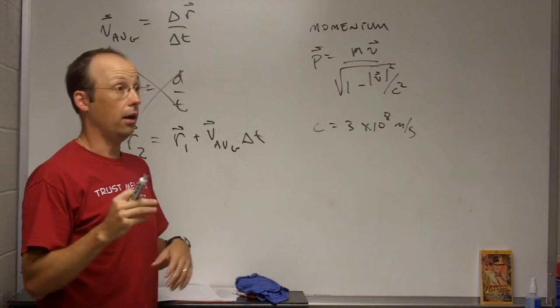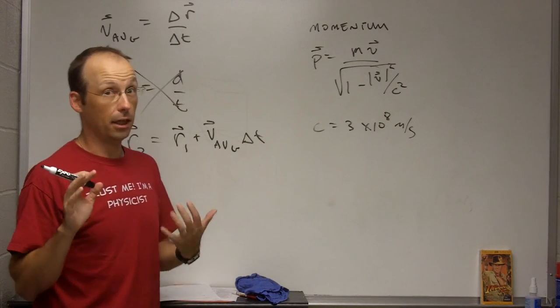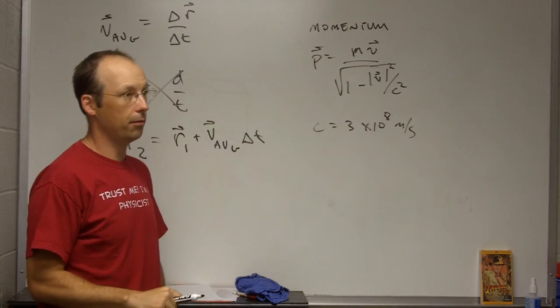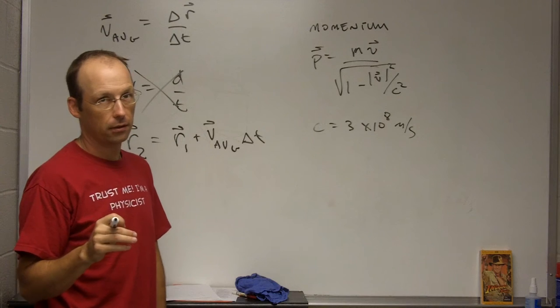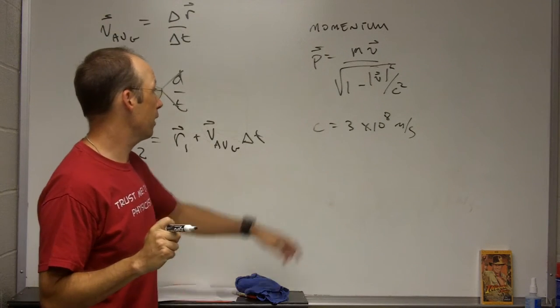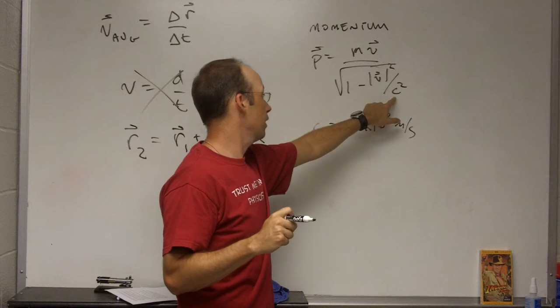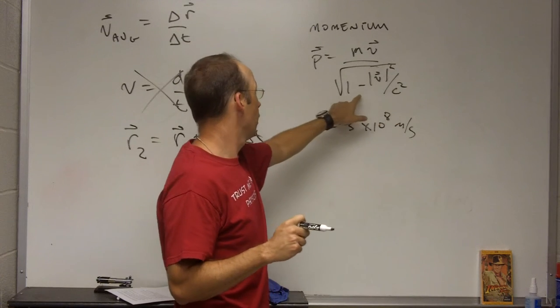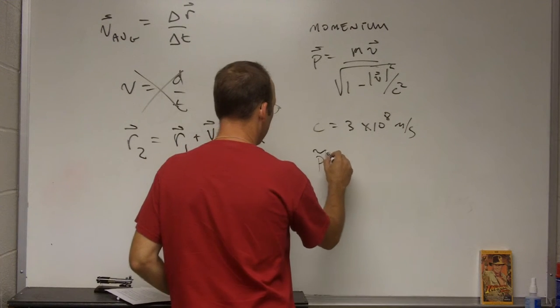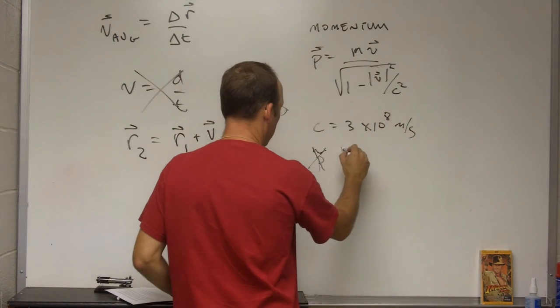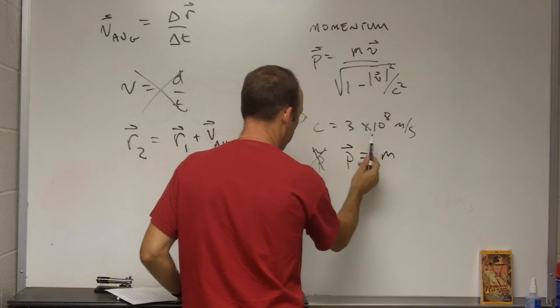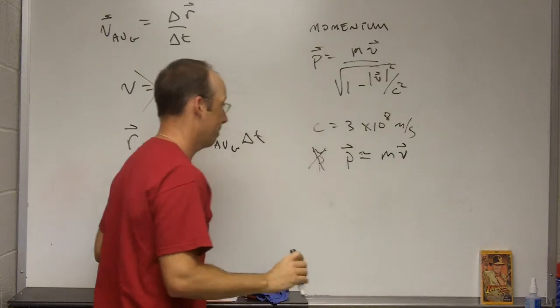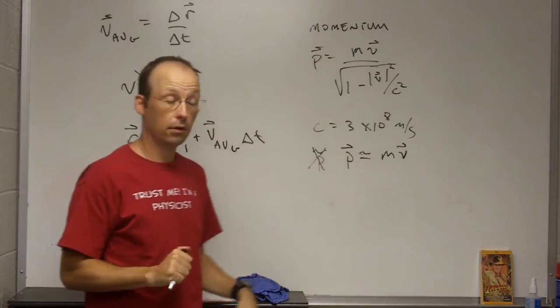Now, for a lot of cases, let's take something super fast like a bullet. A bullet fired from a gun is maybe, let's say, 300 meters per second, which is really fast. 300 meters per second squared over 3 times 10 to the 8th squared is very, very close to zero. So this just becomes, for low speeds, P is approximately equal to mv. Because that whole thing is 1. It's still a vector.